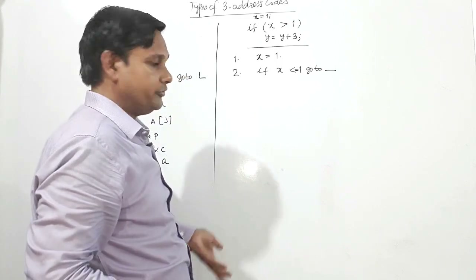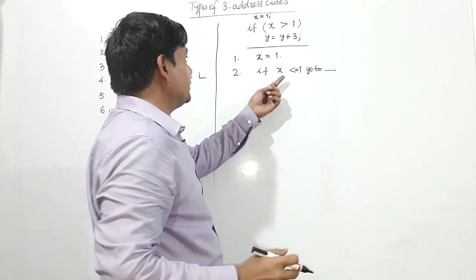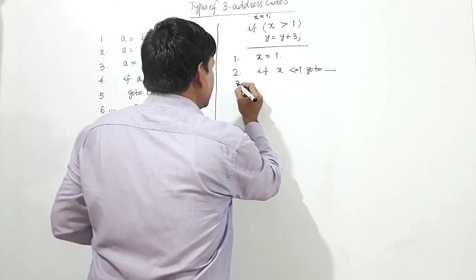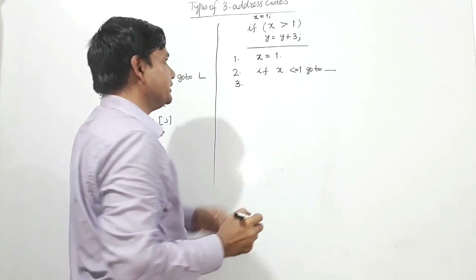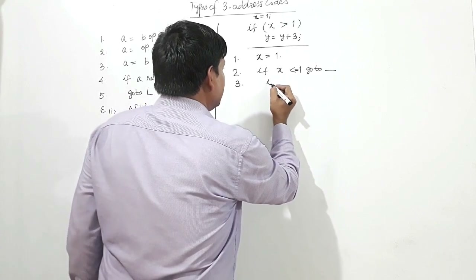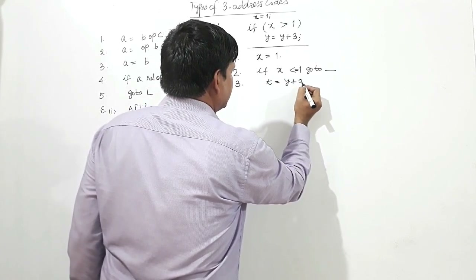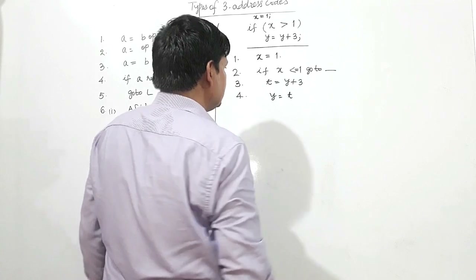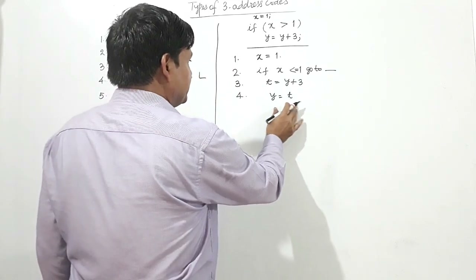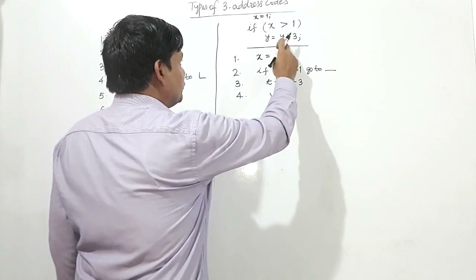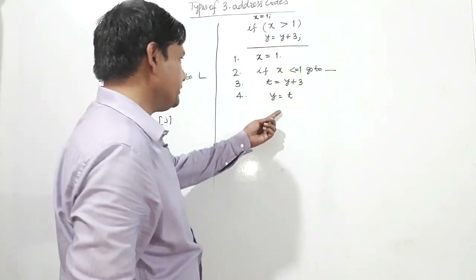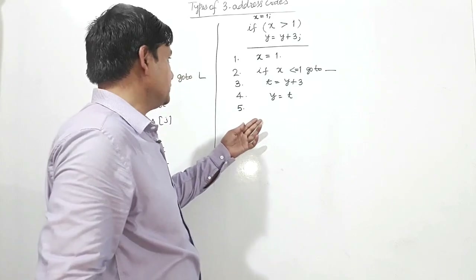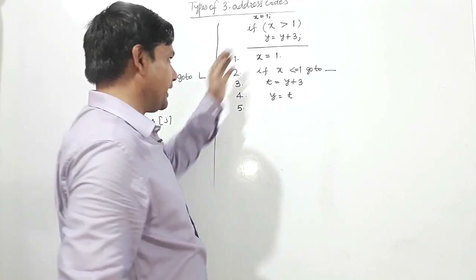Go to some line number. I don't know which line number it will be yet. If X is greater than 1 and this condition is false, control will be shifted to line number 3, which will be T equal to Y plus 3. And in line number 4, T will be assigned into Y. Line 5 is the end of the program — I can write end, stop, or leave it blank.